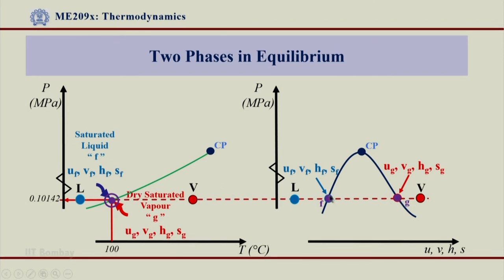This enthalpy difference actually shows the latent heat associated with this phase transformation, and it will be different at different pressures. At one atmosphere, we have got a latent heat of water at one atmosphere. As you go up the top, this latent heat will start decreasing.